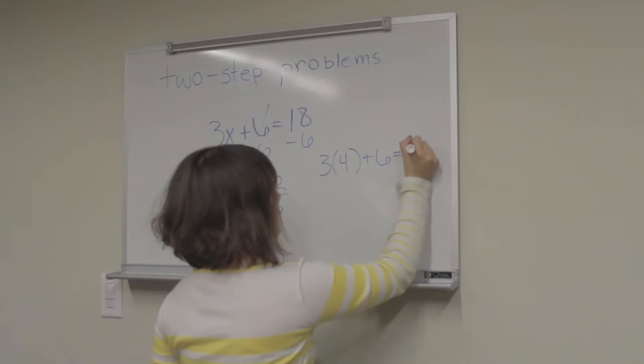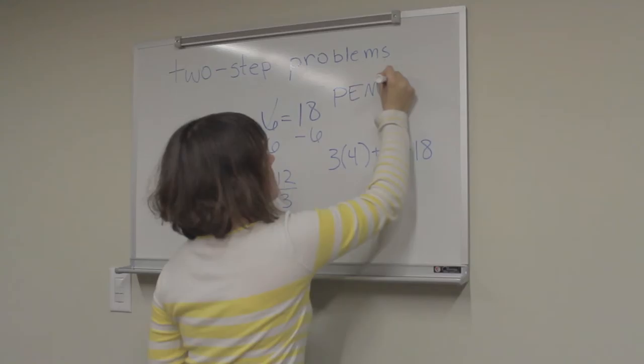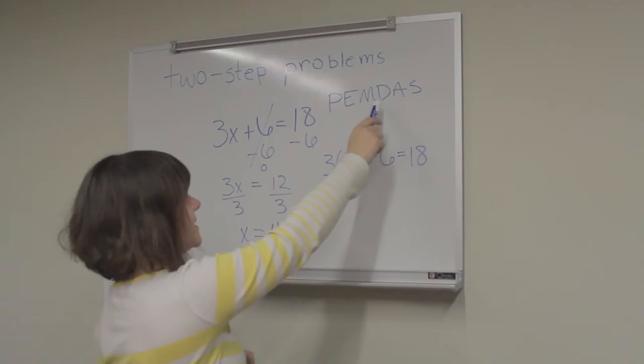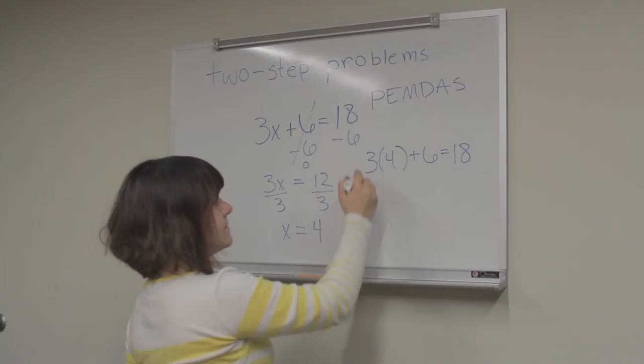And this is just simply order of operations, PEMDAS: Parentheses, exponents, multiplication, division, addition, and subtraction. And so the first step is to multiply within the parentheses.